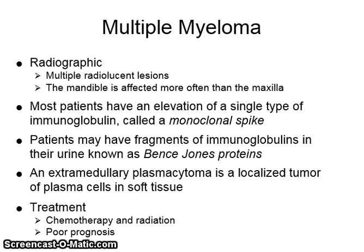Most patients have an elevation of a single type of immunoglobulin called a monoclonal spike. Patients may have fragments of immunoglobulins in their urine, known as Benz-Jones proteins. An extramedullary plasmacytoma is a localized tumor of plasma cells in soft tissue. This is treated with chemotherapy and radiation and usually has a very poor prognosis.